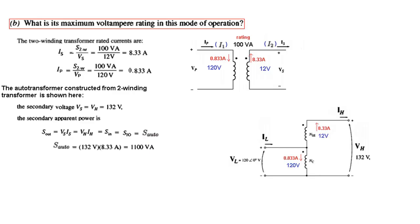So V secondary 132 volt, I secondary 8.33. So multiply this, we got the auto voltage or auto transformer power to be 1100 volt ampere. Note in the two winding it was 100 volt ampere but in this case it can handle up to 1100 volt ampere. This is the same transformer just when connected in auto mode the power handling capacity has increased.